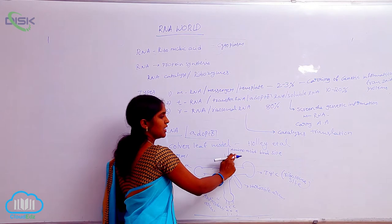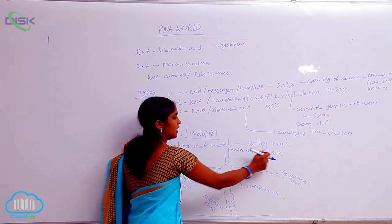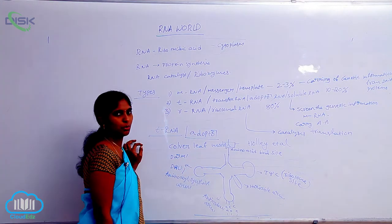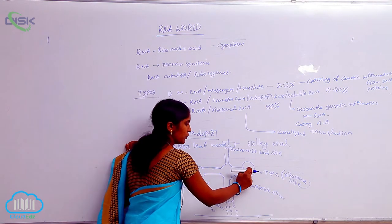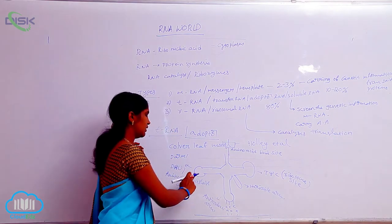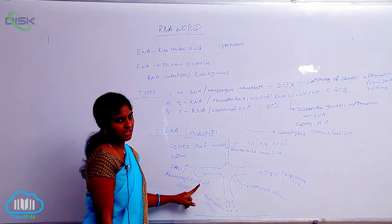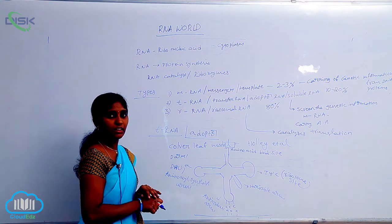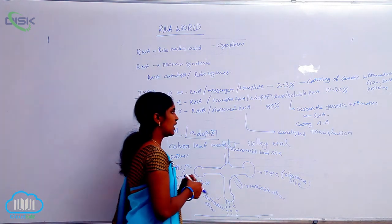The first arm is the aminoacyl binding site arm. Here the amino acids have the site to bind. And here the ribosome is binding. The anticodons are present here. And here aminoacyl synthetase is present. This is the tRNA. But you come to the rRNA.